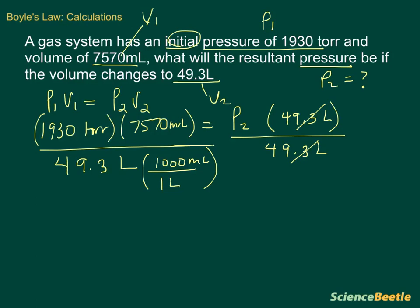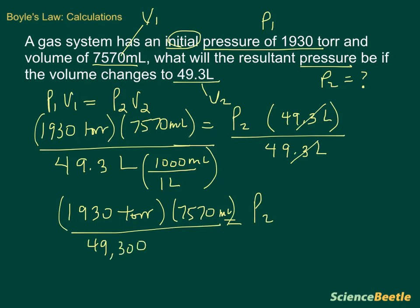So on the right-hand side, things change for us. We now have P2, and this is going to equal some numbers. So we're going to have 1930 torr. This is going to be multiplied by 7570 milliliters. And this is going to be divided by the product that we've got here. So this is going to wind up being 49,300 milliliters. Because our liters cancel.